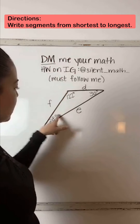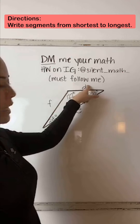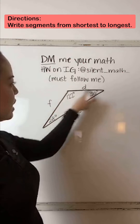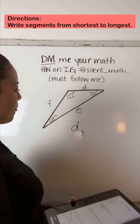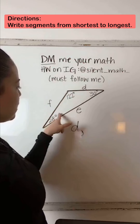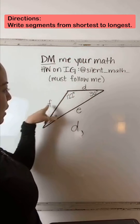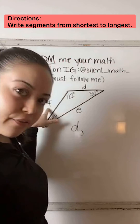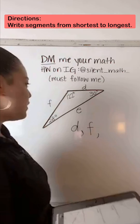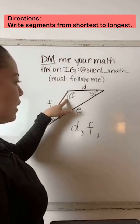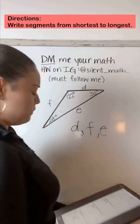28 degrees is the smallest, so directly across 28 degrees is your D, side length D. So we're going to start by listing D first. After 28 degrees, the next smallest was 30 degrees, and 30 degrees is directly across our F. So now F is the next smallest, and then obviously the last one — that's a really big angle — E is going to be our longest side length.